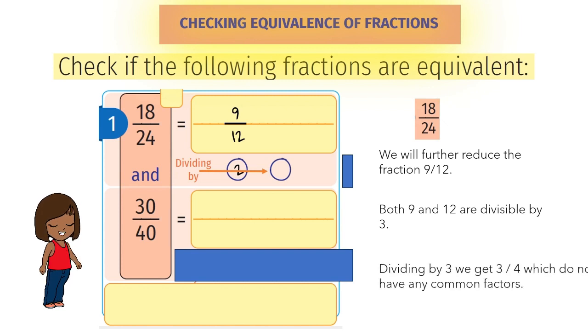This is the fraction 18 by 24 reduced to the lowest terms. 3 and 4 don't have any common factors, so we cannot reduce it any further.